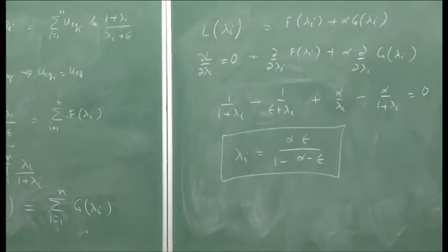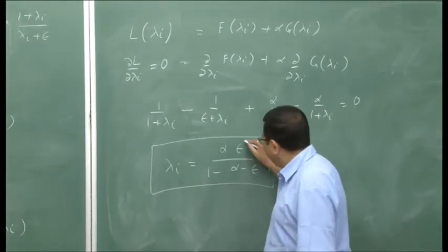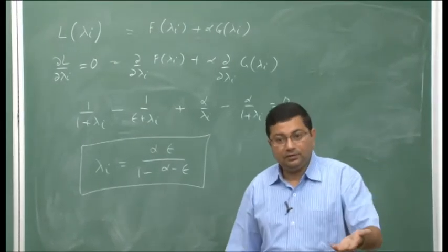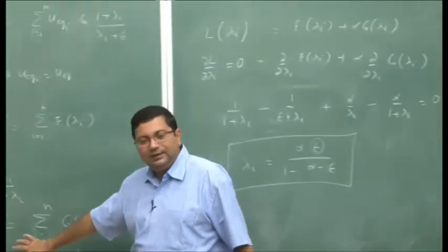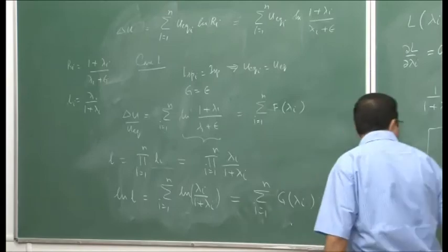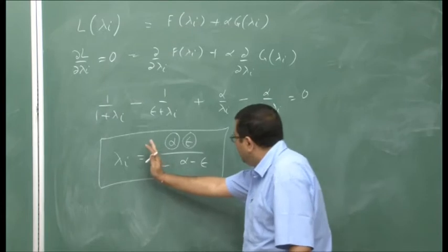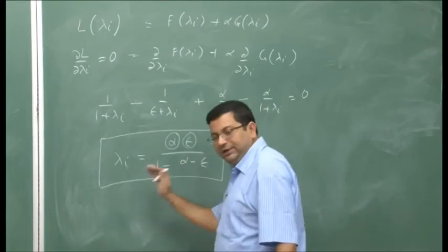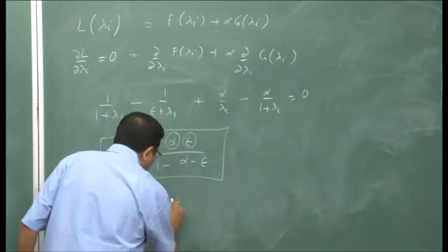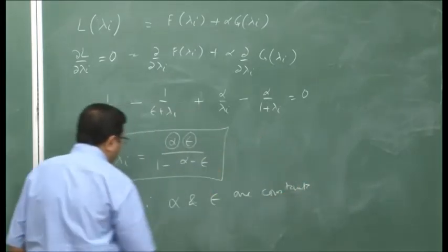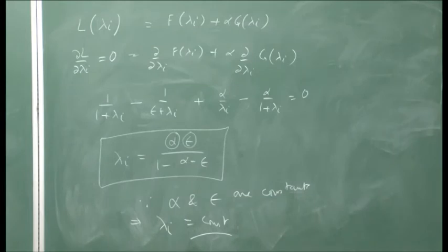Let us proceed from here. Looking at the right-hand side of this equation, since the structural coefficient is the same for all stages, alpha·epsilon is a constant, and the Lagrange multiplier alpha is also a constant. Therefore the right-hand side is a constant, which implies the left-hand side — lambda_i — must also be a constant. This is a very significant observation: lambda_i is constant.